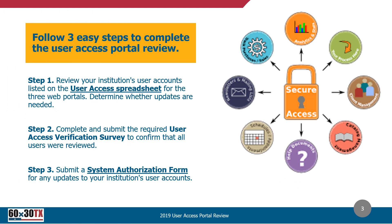Each institution's financial aid director should follow these three steps to complete the user access portal review. Step one: review your institution's user accounts listed on the user access spreadsheet provided to you by financial aid services. Step two: complete and submit the required user access verification survey confirming that all users have been reviewed.